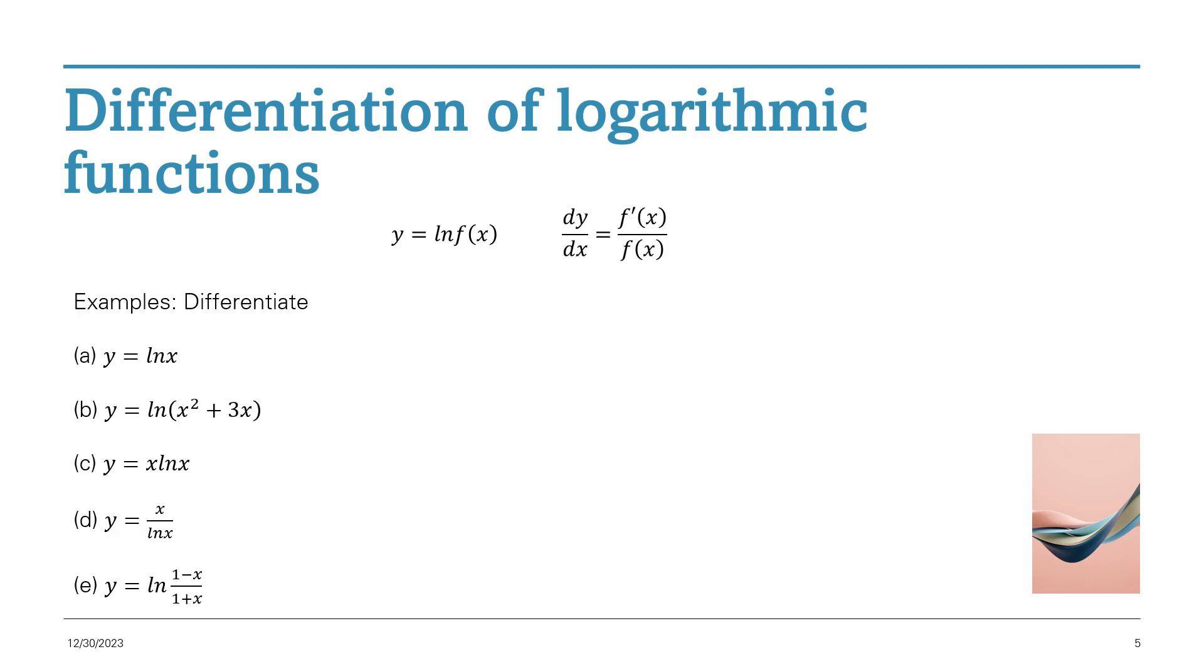Let's have a go at a couple of examples. So I'm going to keep the formula there, so given y equals ln of f(x), the derivative is f(x) on the bottom, f'(x) on the top. And they're the five we're going to look at.